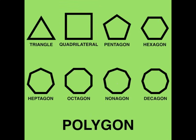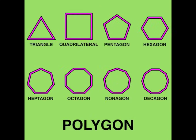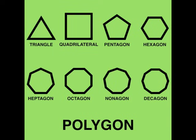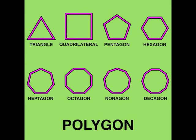A polygon is a shape with lines that connect. The number of sides tells us the name of the shape.